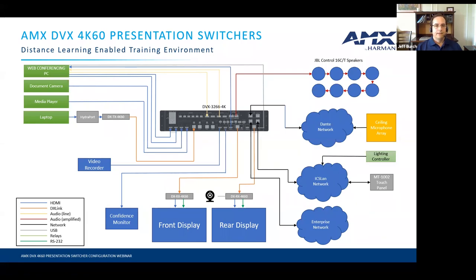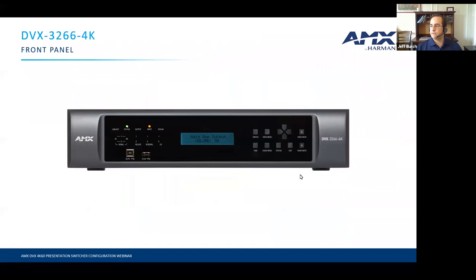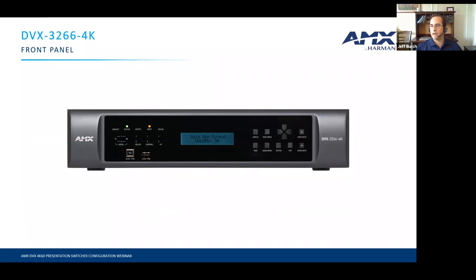Our first step is pulling the DVX out of the box. It ships with feet and rack mounting ears, so you can place it in a lectern, on a credenza, in a cabinet, or mount it in a standard rack. All models are two rack units high — down from three rack units on older models — giving you an extra rack unit of space for other components, neater cabling, or better ventilation.